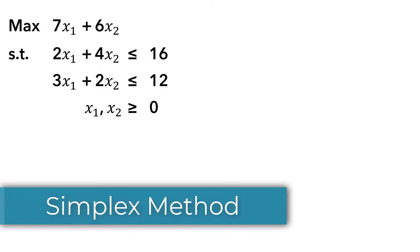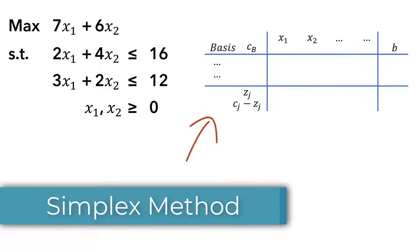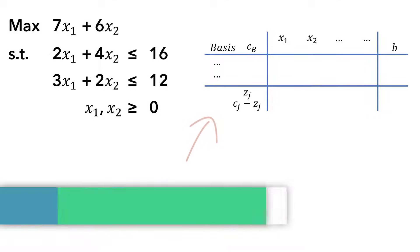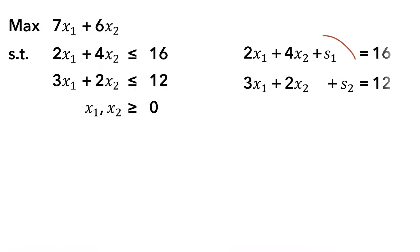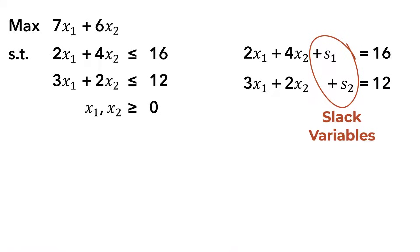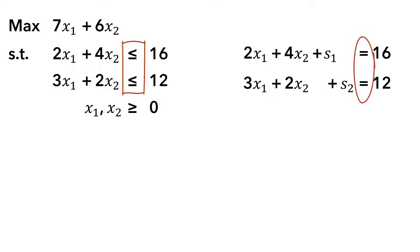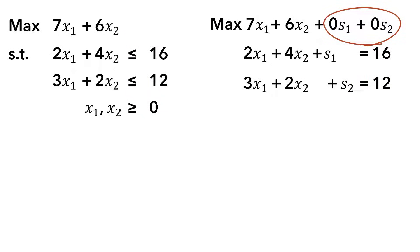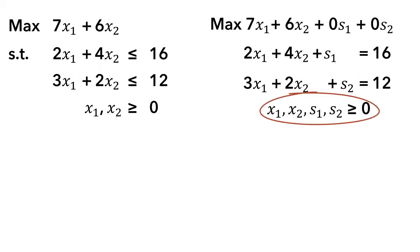In this video, I will be solving this maximization problem using this simplex tableau setup. Writing it in standard form, we add slack variables to the constraints because they are less than or equal to constraints, and also change the inequalities to equalities. The coefficients of the slack variables will be zeros in the objective function, and all the variables will be non-negative.